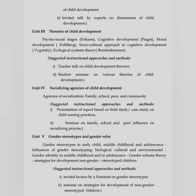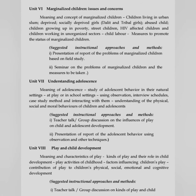Unit 5 is Gender Stereotypes and Gender Roles: Gender Stereotypes in Early Childhood, Middle Childhood and Adolescence; Influence of Gender Stereotyping — Biological, Cultural and Environmental; Gender Identity in Middle Childhood and Adolescence; Gender Schema Theory; Strategies for Development of Non-Gender Stereotyped Children. Unit 6 is Marginalized Children — Issues and Concerns: Meaning and Concepts of Marginalized Children; Children Living in Urban Slum; Socially Deprived Girls — Dalit and Tribal Girls; Abused Child; Children Growing Up in Poverty; Street Children; HIV Affected Children; Children Working in Unorganized Sector — Child Labor; Measures to Promote the Status of Marginalized Children.